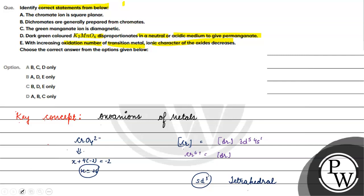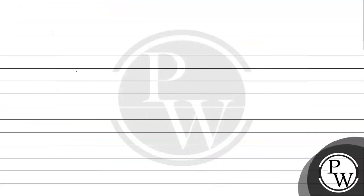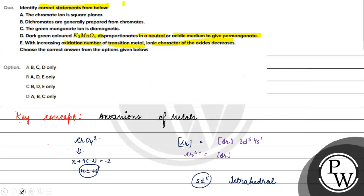Which is why we have option B in the answer. Dichromates are generally prepared from chromates - this statement is correct. Dichromate is Cr2O7 2-. Dichromate and chromate can be interconverted by changing the pH. So option B is correct.